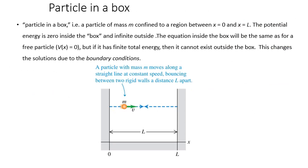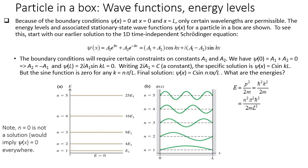The particle in a box is a particle of mass m confined in a region between 0 and L. The potential energy is zero inside and infinite outside. The wave function solution can be written as psi of x equal to A1 e^(ikx) plus A2 e^(-ikx), which can also be written as (A1 + A2) cos(kx) plus i(A1 - A2) sin(kx).